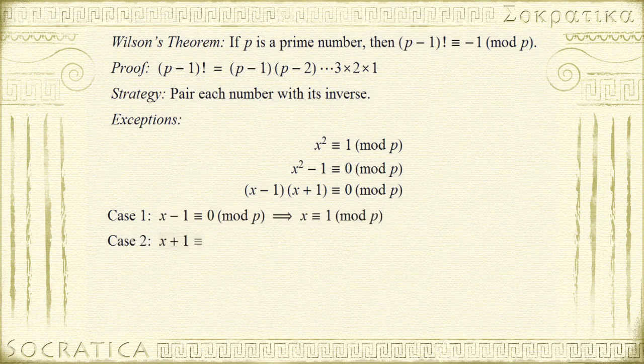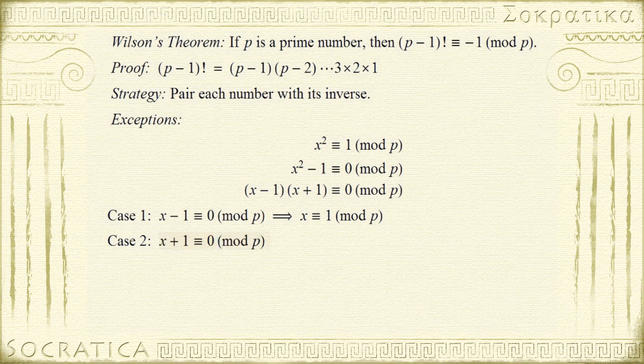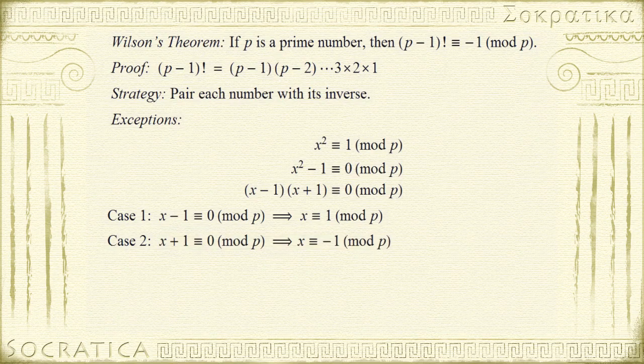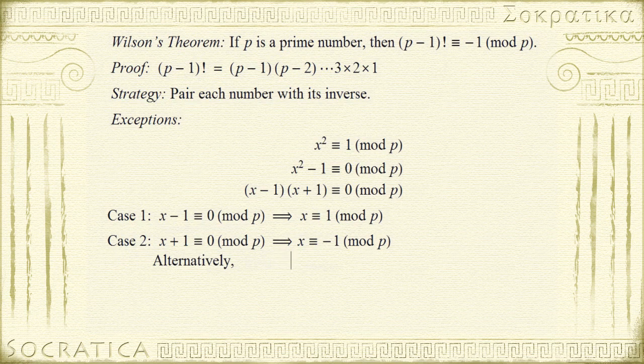Next, x plus 1 is congruent to 0 mod p. If we solve this, we get x is congruent to negative 1 mod p. Or to write it alternatively, you can write this as x is congruent to p minus 1 mod p.